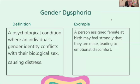Gender dysphoria: a condition where an individual's gender identity conflicts with their biological sex, causing distress. For example, a person assigned female at birth may feel strongly that they are male, leading to emotional discomfort.